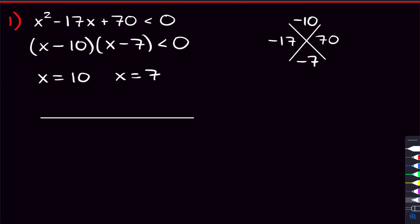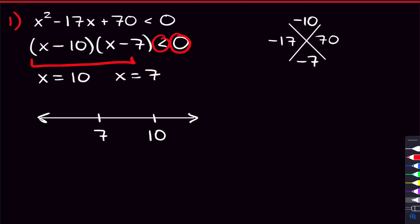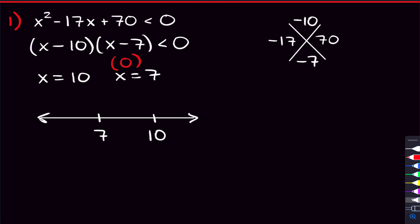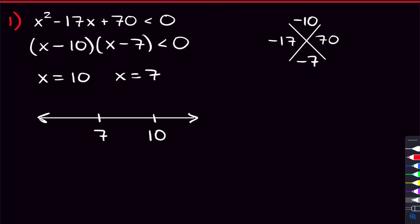Those numbers still matter here, and what we're going to do is put them on a number line — x equals seven and x equals 10. What we're looking for is where this quadratic is less than zero, not where it's equal to zero. Because if we plug in 10 or seven, that will make this quadratic equal to zero — we get zero from that factor. But we're asking where it is less than zero, so seven and 10 are not going to be in our solution set. They're going to get open circles.